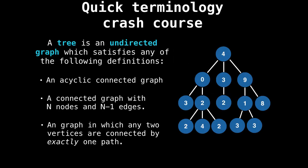I'm going to give you a quick crash course on trees before we get started. A tree is an undirected graph which can satisfy any of the following definitions. There are actually multiple definitions, but these are the most popular ones. A tree is an undirected graph which is connected and acyclic. Acyclic means there are no cycles. Another definition is we have N nodes but N minus 1 edges.